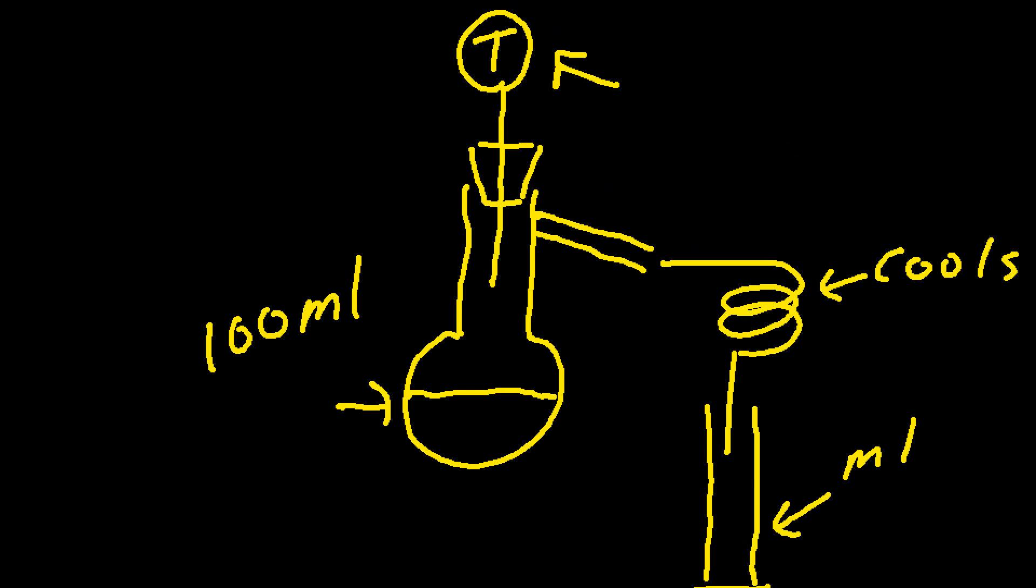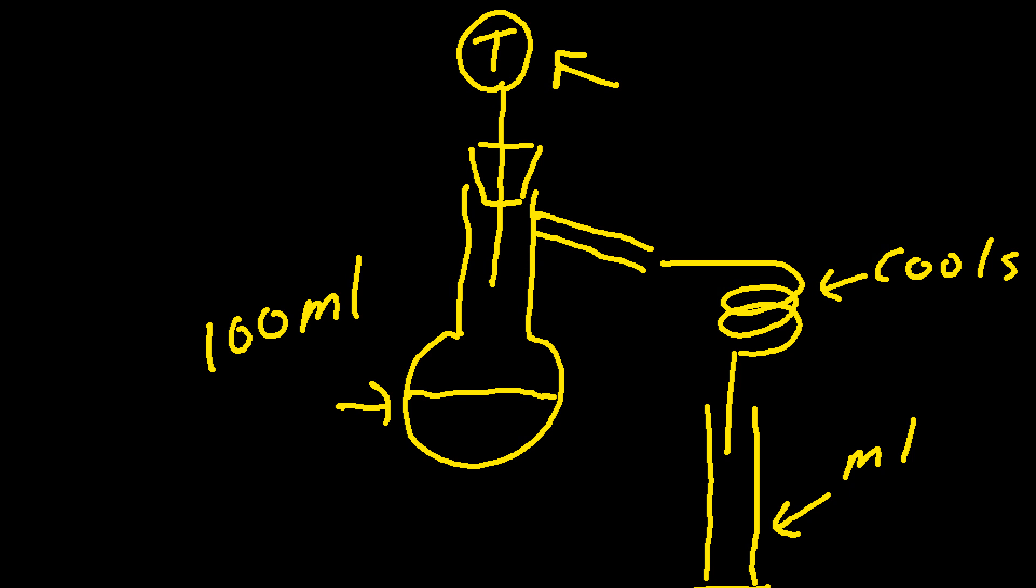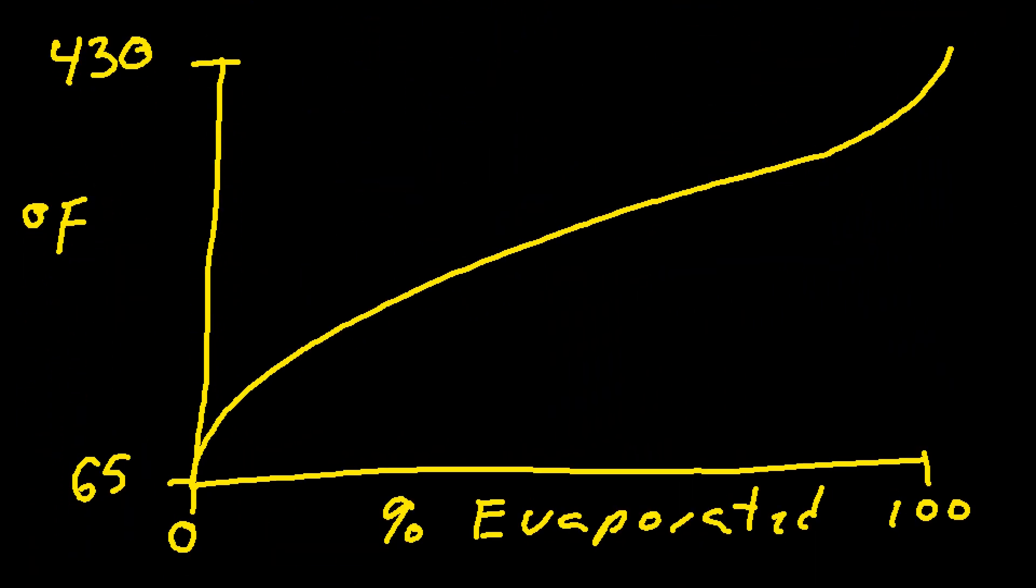Then what would happen is we kept putting heat on this boiling flask. The temperature would keep increasing. We would continue to get liquid dropping into our graduated cylinder. When the graduated cylinder was at almost 100 milliliters, and the boiling flask was almost completely empty, what we would find is that the vapors at the thermometer would be right around 430 degrees Fahrenheit, which is quite hot.